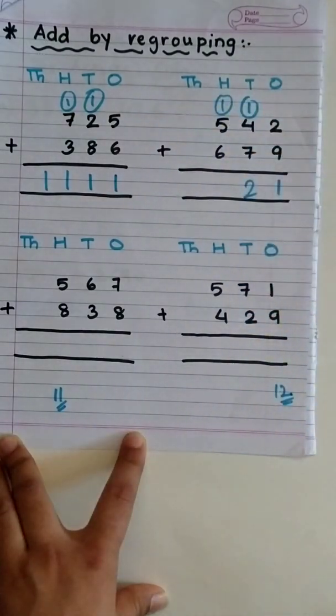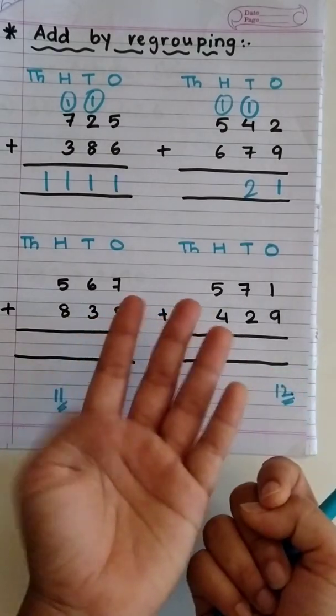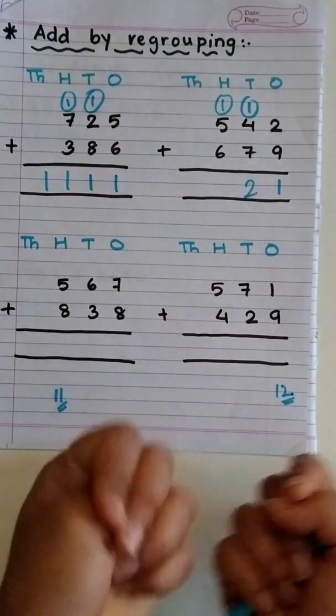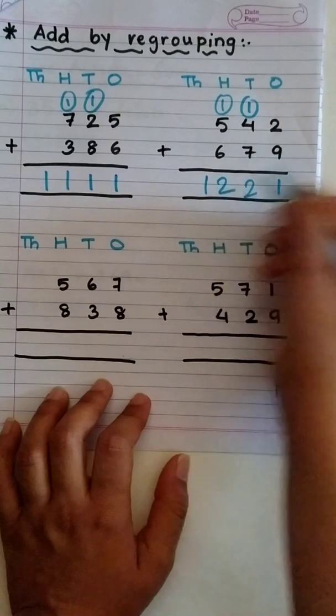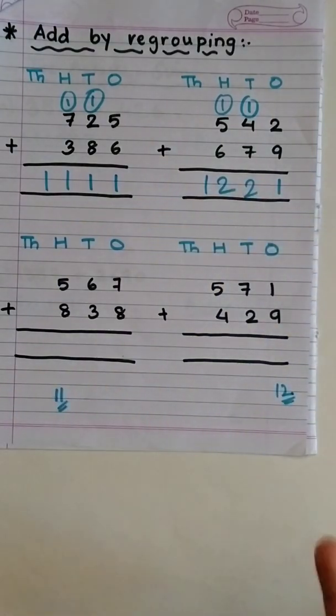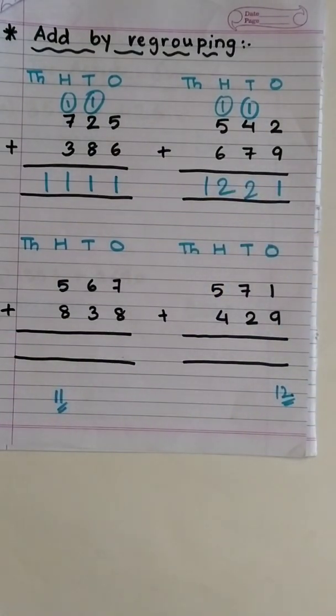Now, 5 plus 1 is 6. And, 6 plus 6. 7, 8, 9, 10, 11, 12. So, the answer is 1221. Easy. Isn't it? Great.